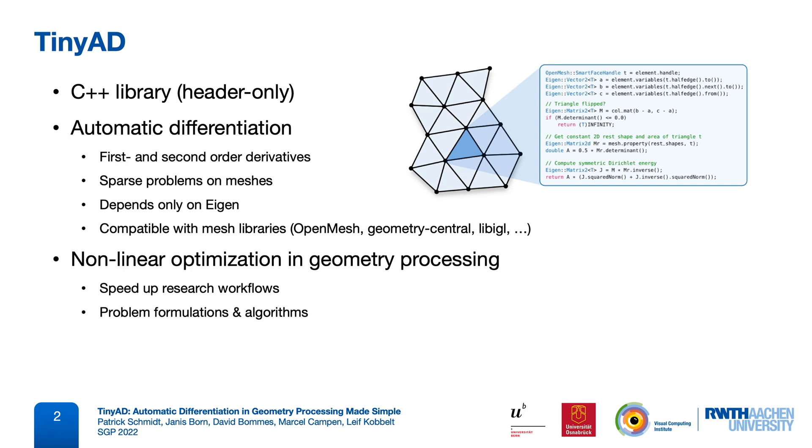We can write both problem formulations and optimization algorithms in very few lines of code, directly in a C++ environment, while always having easy access to derivatives, most importantly to sparse Hessian matrices, which can otherwise be extremely tedious to obtain. We are able to very quickly experiment with different objective functions, without having to worry about the details of differentiation.